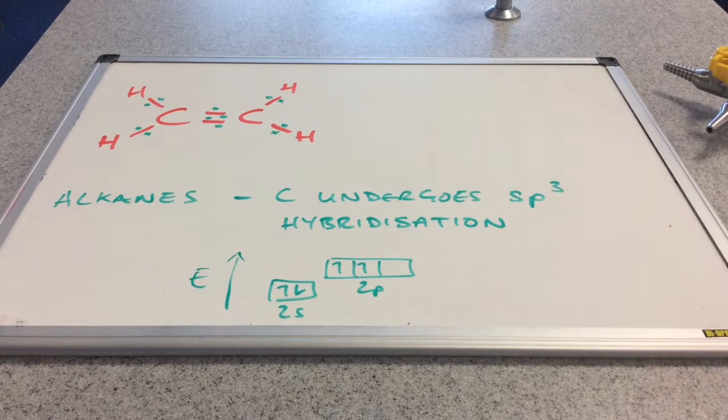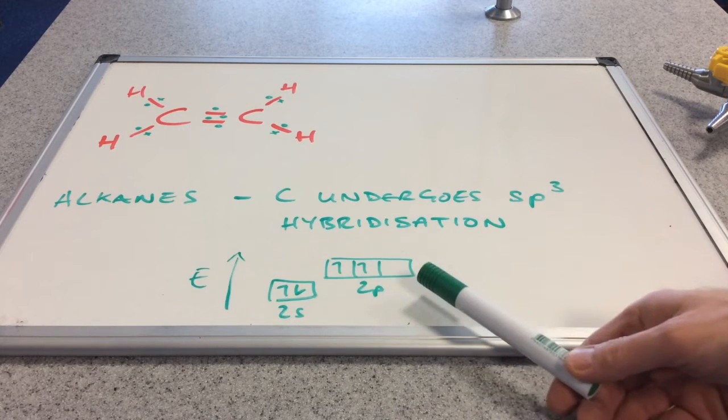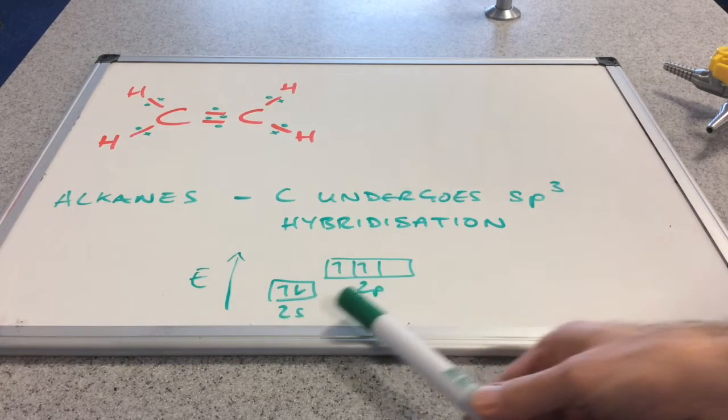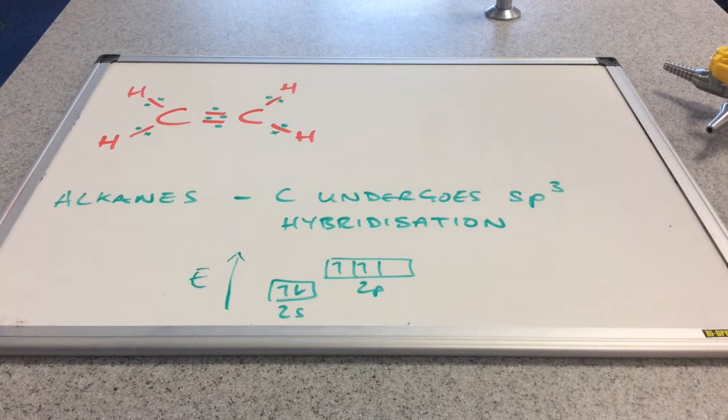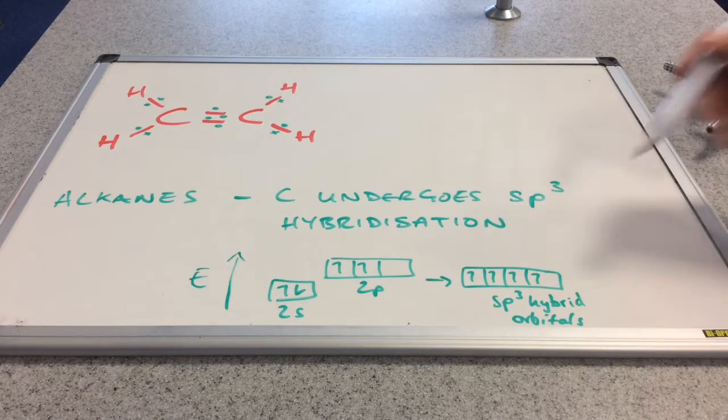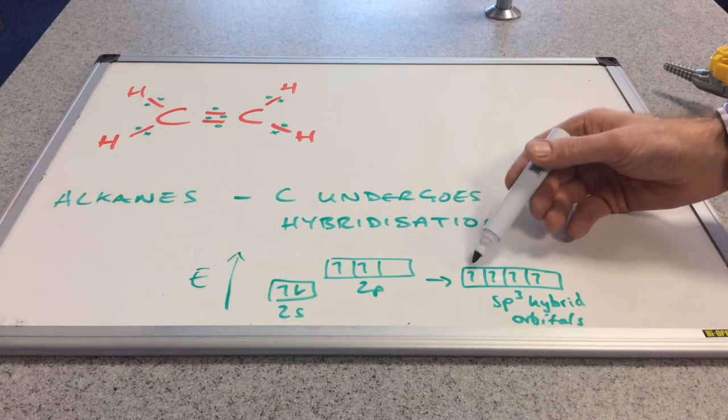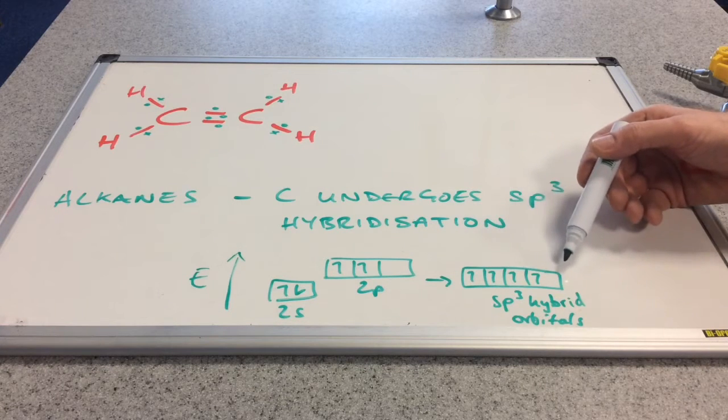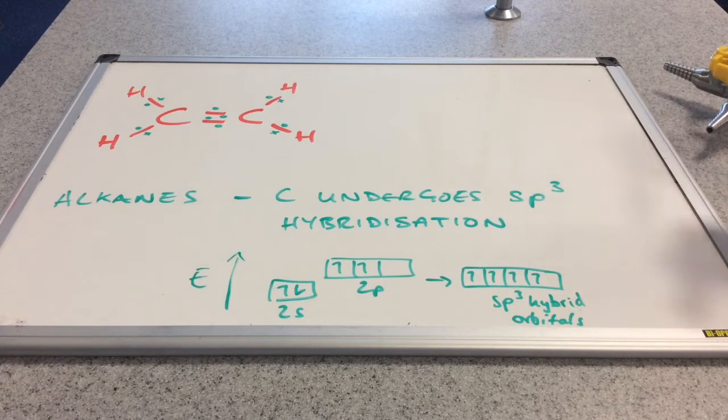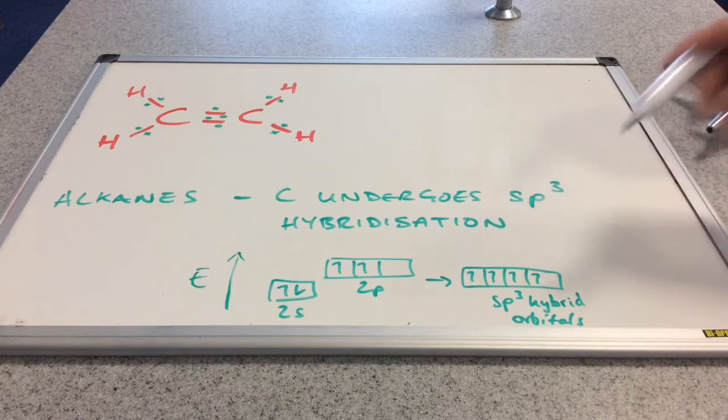And that's where the 2s orbital and the three 2p orbitals actually hybridise or blend together to form four identical orbitals, giving us these four identical regions of space, all the same energy, each with an unpaired electron in, and we call these sp³ hybrid orbitals, and hence we can get four identical covalent bonds from these.